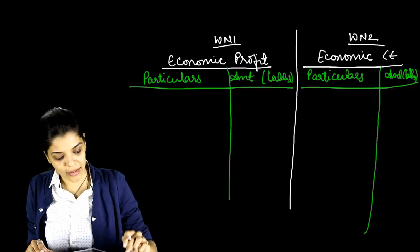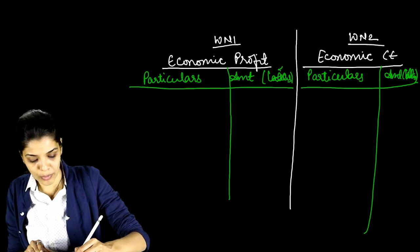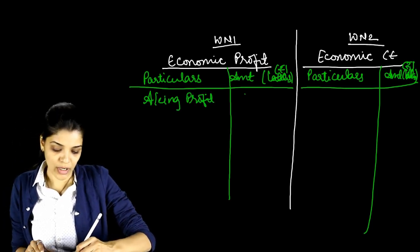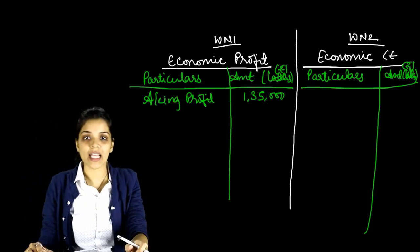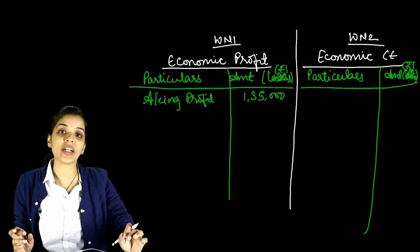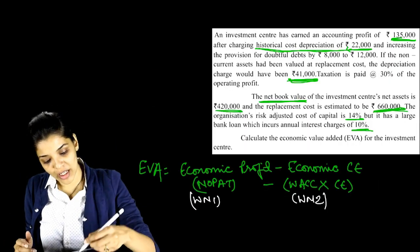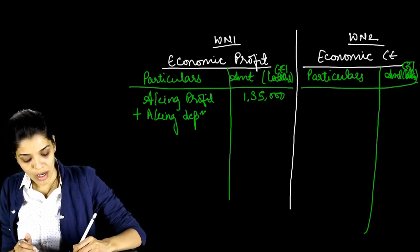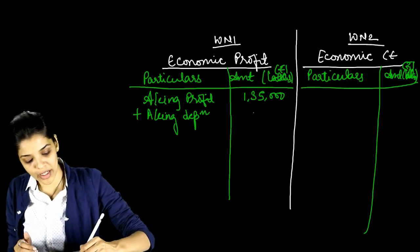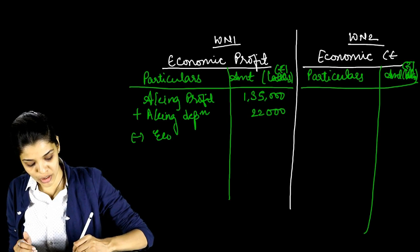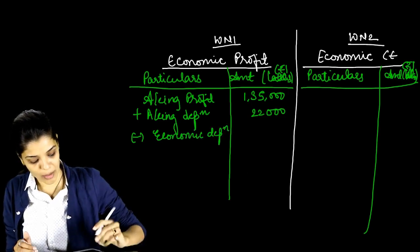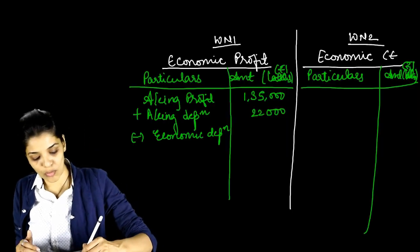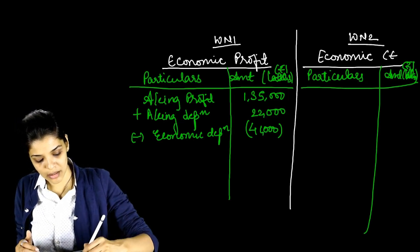For profit, we first take Accounting Profit: 1,35,000. The figures are in rupees, not lakhs. From accounting profit we go to NOPAT — Net Operating Profit After Tax but Before Interest. We add back accounting depreciation of 22,000 because it was already deducted, then minus economic depreciation — depreciation on replacement cost — which is 41,000.